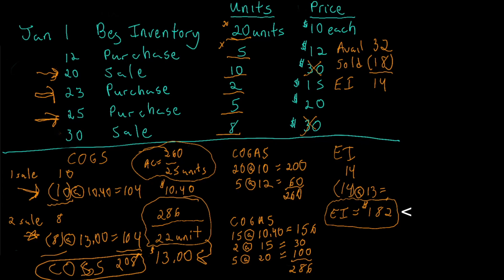So there you have it gang — a perfect illustration of how to properly calculate the cost of goods sold and the cost of ending inventory under the average cost method. Hopefully you were able to follow all the tips and tricks so that you can get to the right answer under any given circumstance. If so, don't forget to like, subscribe, and share the channel with your friends so they can chase the bags as well. Thanks for your time and patience, and I will see you soon.